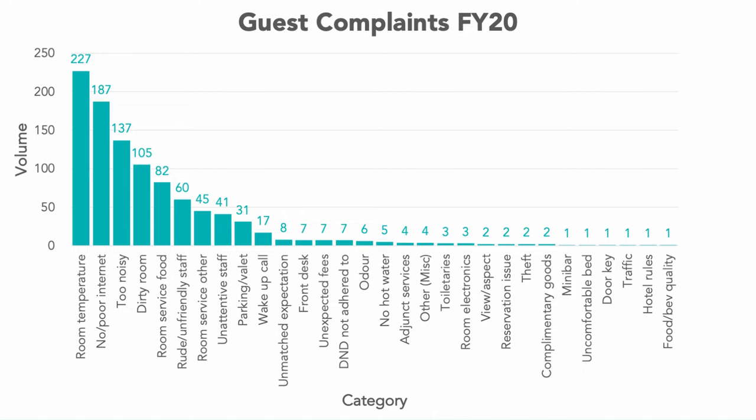We're going to turn this into a Pareto chart by adding a second y-axis on the right-hand side to show the percentage totals as we add them up from left to right. This axis is always set at 100% maximum, representing the sum total of all our complaints. These two y-axes work together — the ones on the left and right-hand side — which some people find a little confusing, so I'll go through step-by-step to show you exactly how it works.